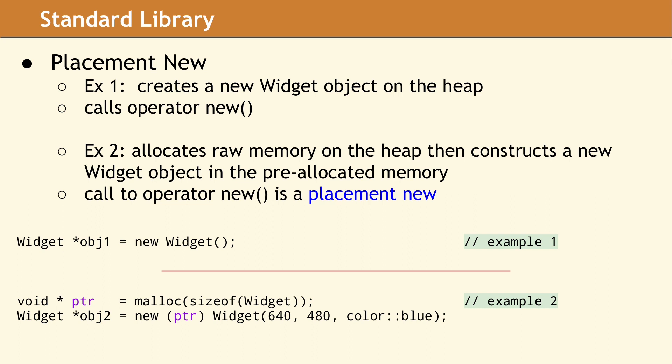Example 2 is a call to placement new. This code separates the memory allocation from the object instantiation. The first line of code in this example declares a variable and then allocates a block of memory using malloc, nothing more. The second line invokes the new operator and passes an extra parameter. By passing PTR before the data type, the new operator will omit the allocation step and simply instantiate a new widget object in the block of memory pointed to by PTR.